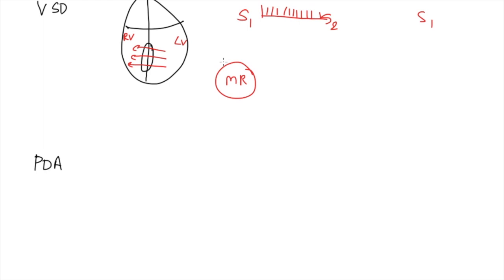VSD must be differentiated from MR, which is also a systolic murmur. The key differentiating point is location: MR is heard at the apex radiating to the axilla, while VSD is heard at the sternal border.